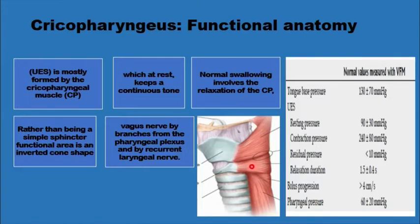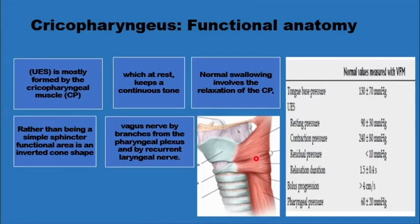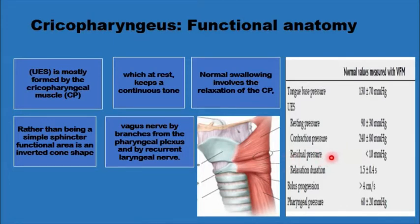The cricopharyngeal muscle at rest has a continuous tone of about 90 mmHg, plus or minus 30 mmHg. During a normal swallow, it relaxes and the pressure drops from 90 mmHg to less than 10 mmHg. This allows a bolus in the pharynx to pass through the relaxed segment at about 4 cm per second. The muscle remains relaxed for about 1.5 seconds, and the pharyngeal pressure of about 60 mmHg, plus or minus 20 mmHg, would easily push the bolus through.